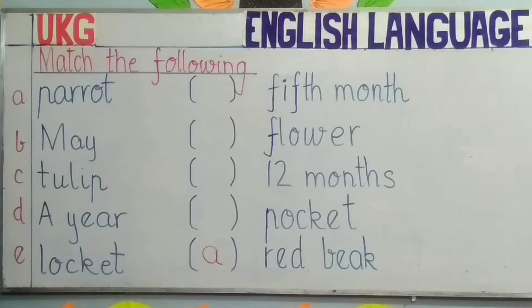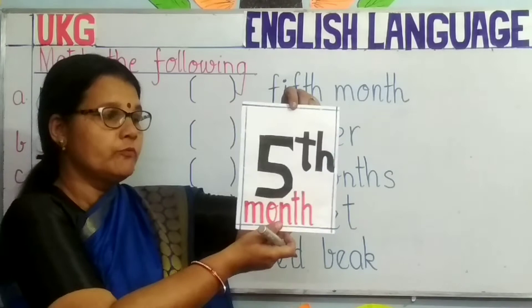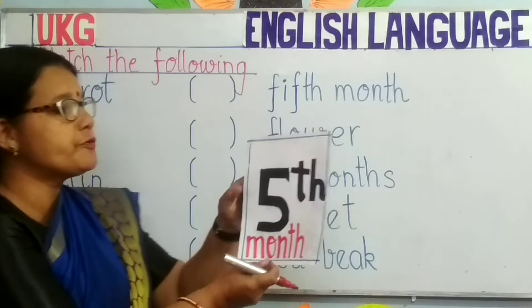Next line, B: May. Which word will match with May? What is this, children? This is the fifth month. You have to look out for fifth month in this column. The first line is fifth month. So you will write B.